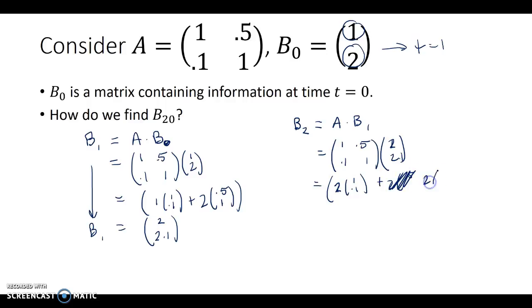So 2 plus 2 times 0.1, excuse me, 2.1 times the vector 0.5, 1. Carrying out our matrix multiplication: 2 times 1 plus 2.1 times 0.5 is 1.05 plus 2, which is 3.05, and 2 times 0.1 is 0.2 plus 2.1 is 2.3. I hope I've done the arithmetic correctly, but hopefully we can see the idea. Again, we have some growth. The top component has grown by just over 1, 1.05 actually, and the bottom component has grown by 0.2.